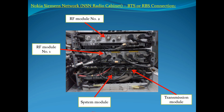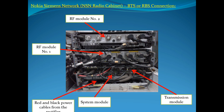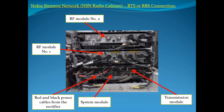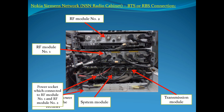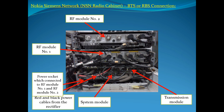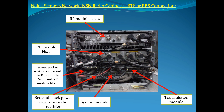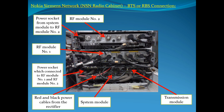Red and Black Power Cables coming from the Rectifier. The Power Socket is connected to RF Module No. 1 and RF Module No. 2. There is also a Power Socket running from the System Module to RF Module No. 2.